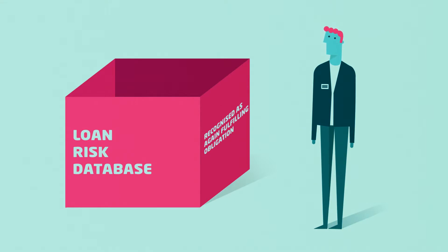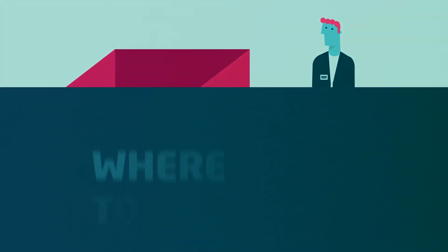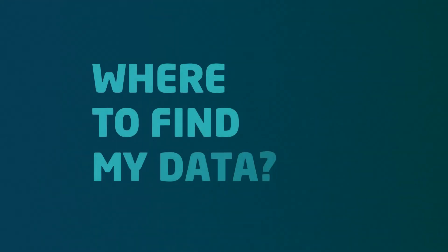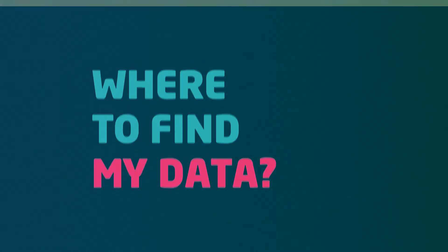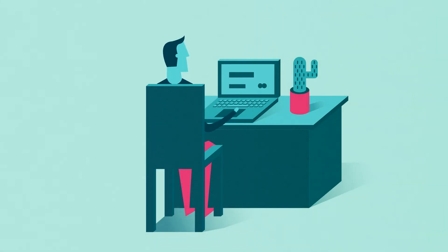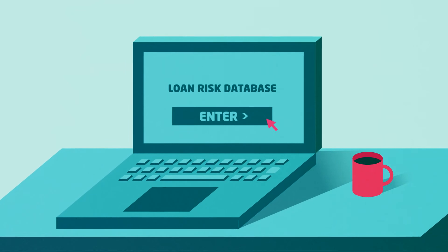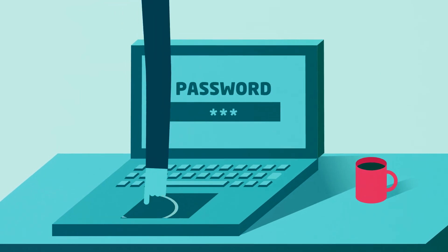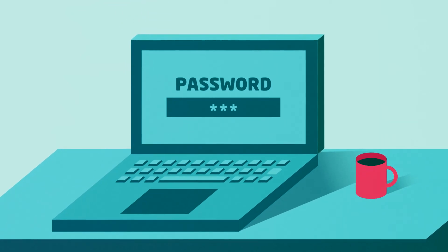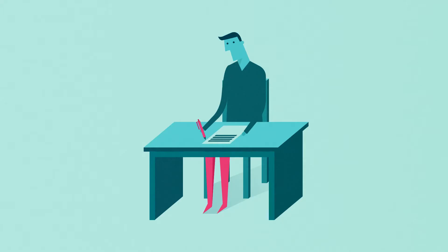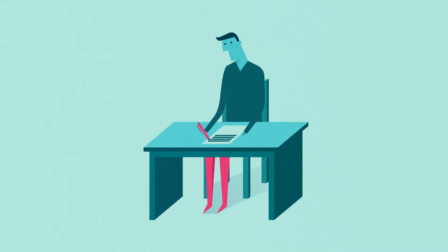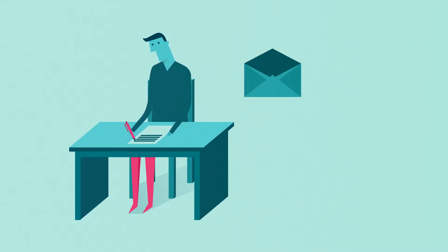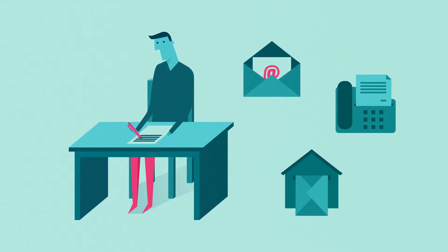There are several ways to view the information available in the Loan Risk Database. The fastest and easiest way is to log in via the Electronic Services for Residents information system. For this you need an electronic identification method, such as internet banking. Or you can fill in a set form request and send it via email, fax, or regular mail.